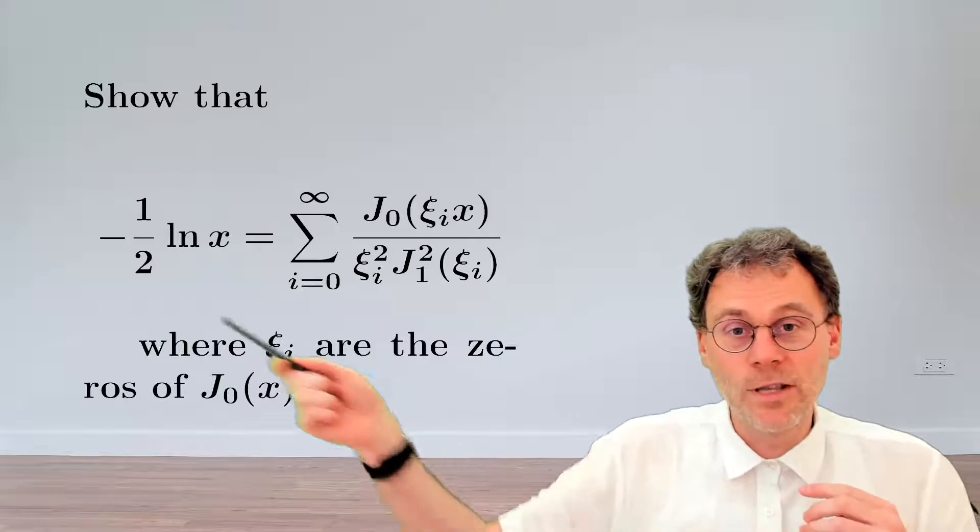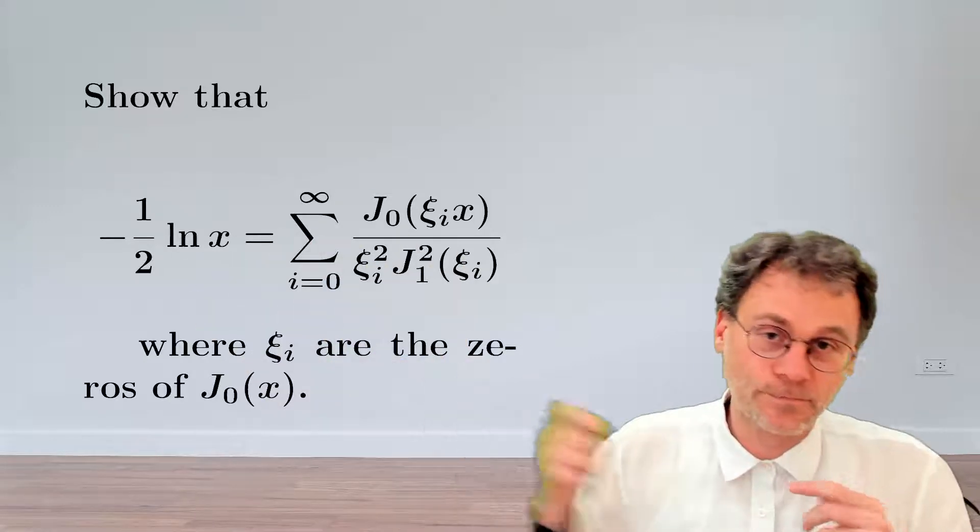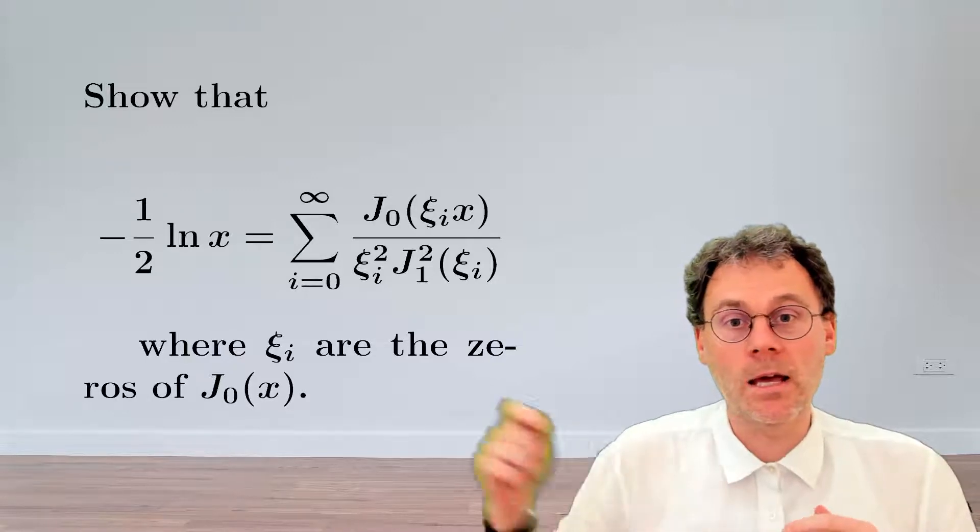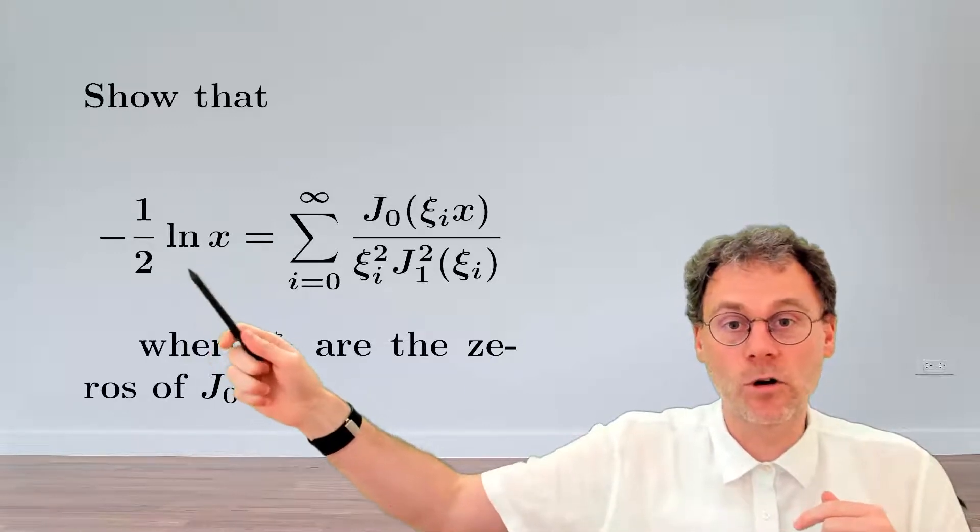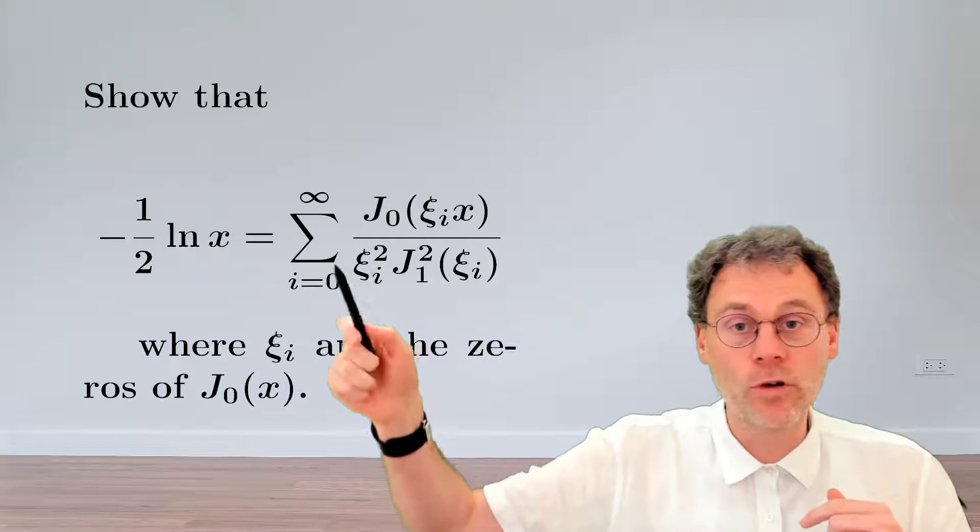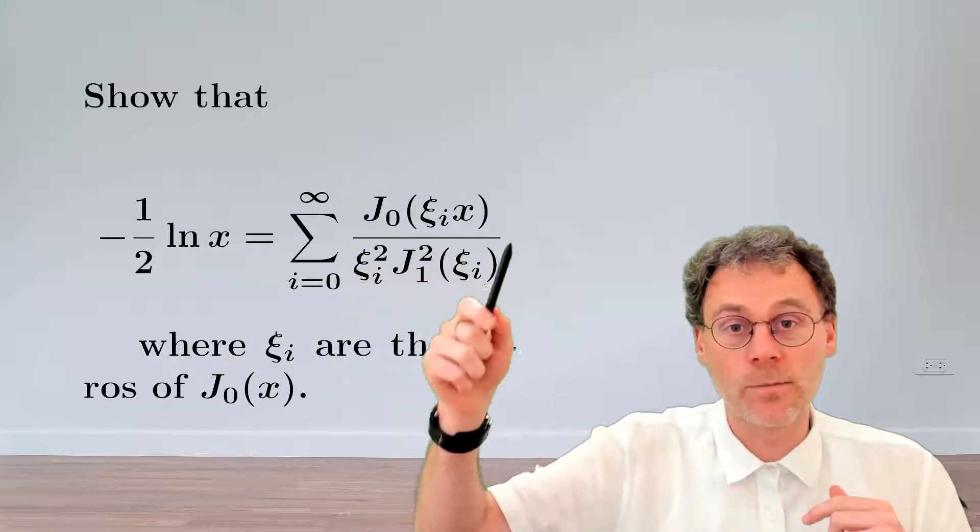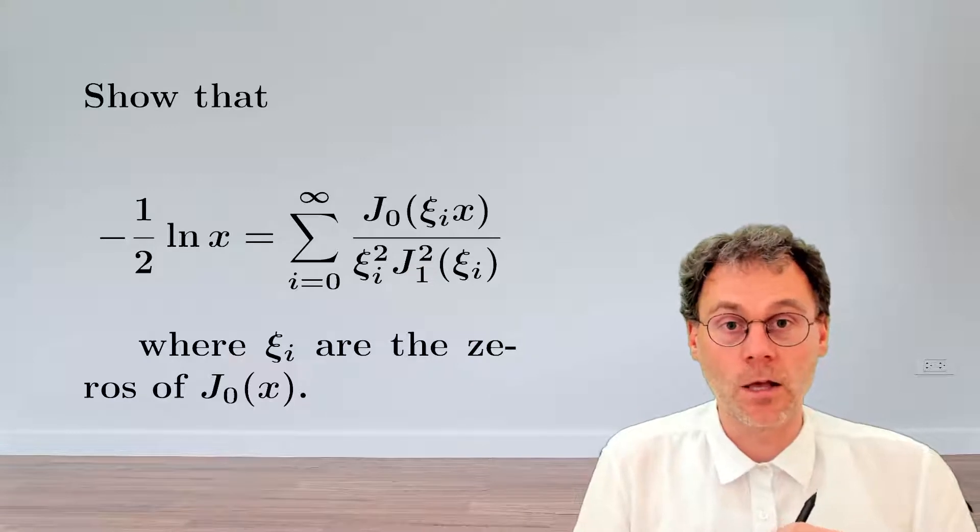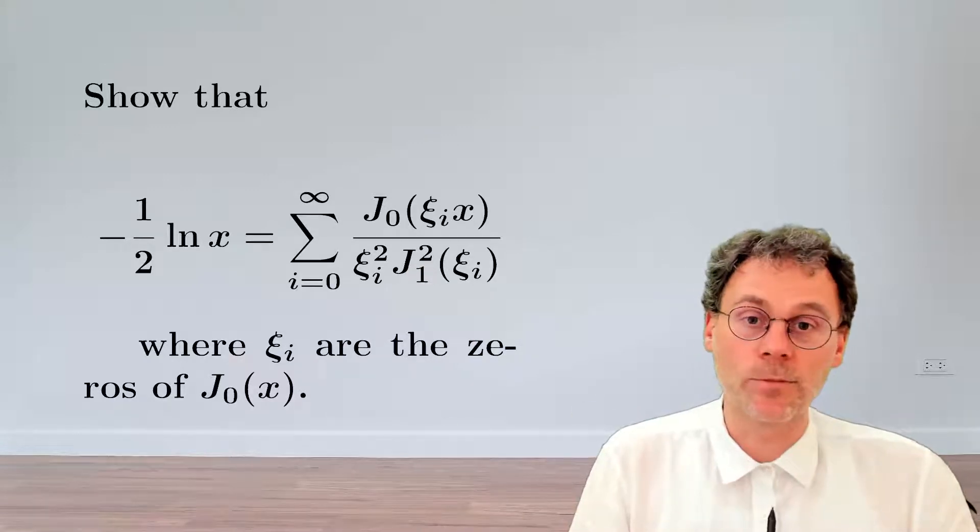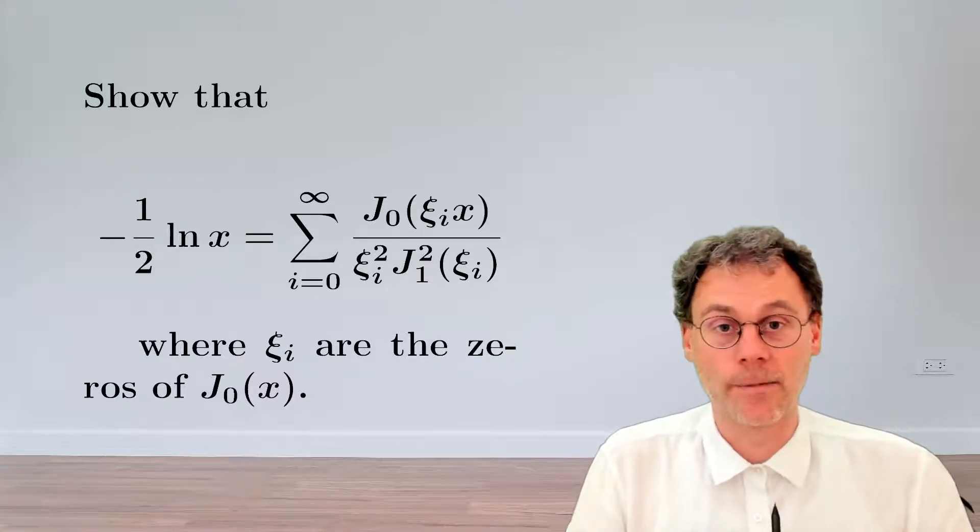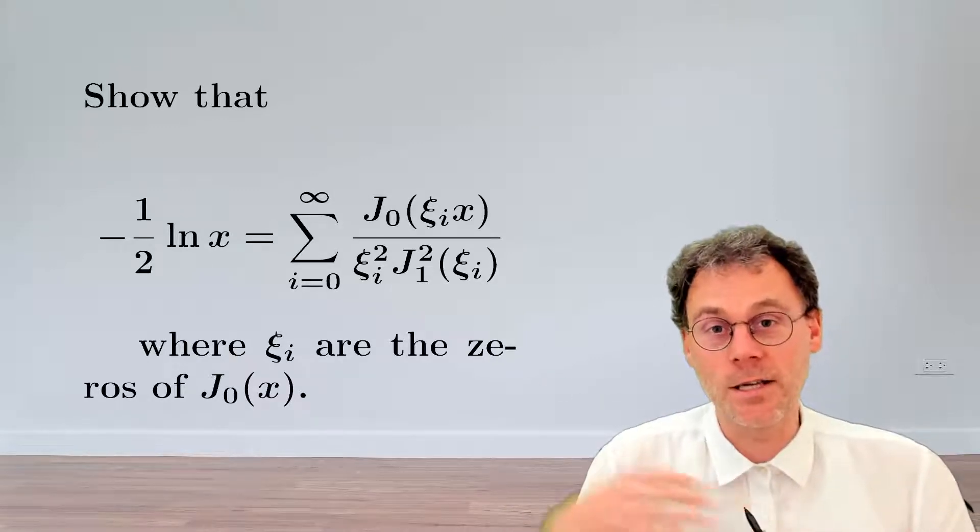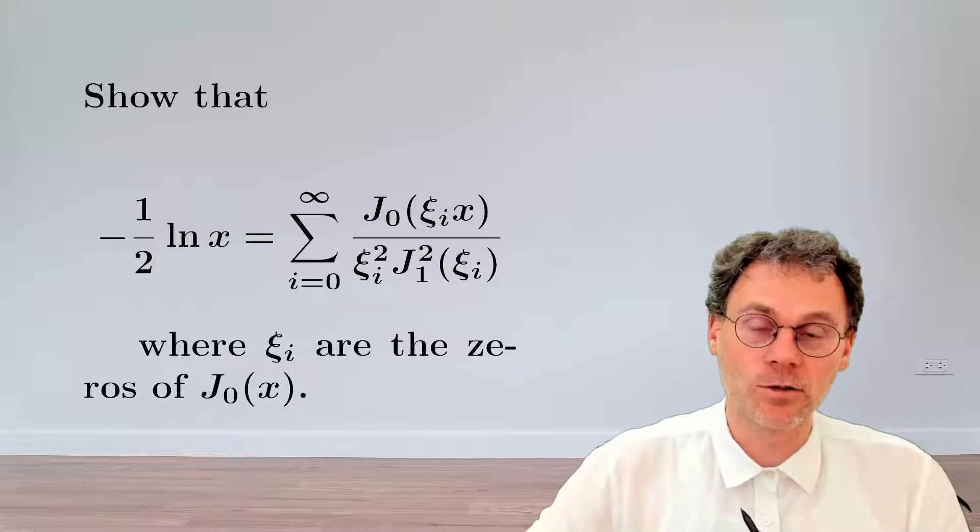Again, a delightfully intimidating expression over here, until you realize that basically what we asked you to do here is expand this function logarithm of x into a Fourier Bessel series using these Bessel functions of order 0 as basis functions. So knowing that, then this thing becomes slightly less intimidating, hopefully. So let's pause the video and see if you can prove that this is true.